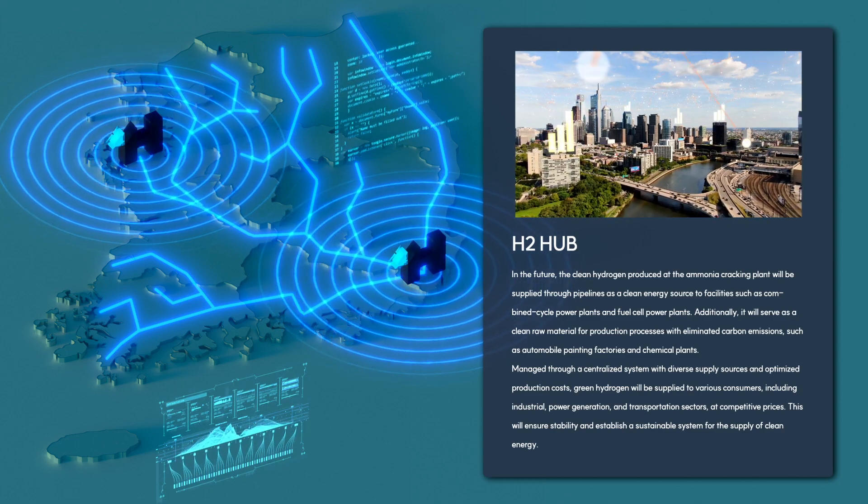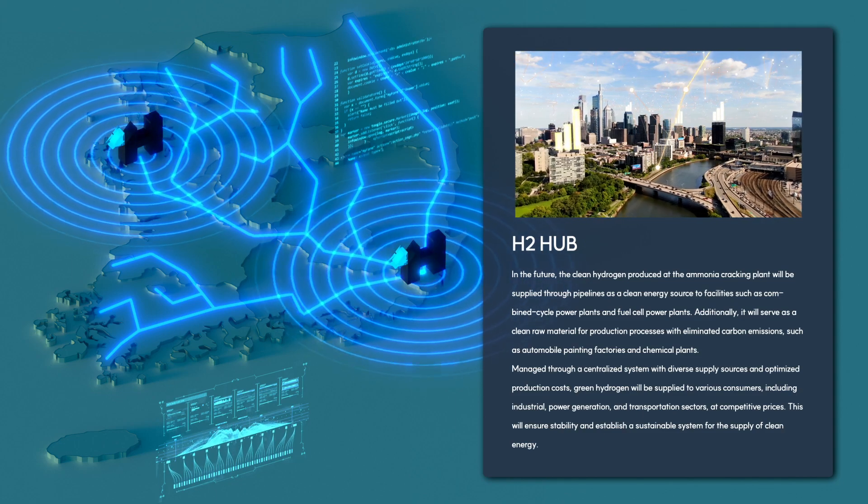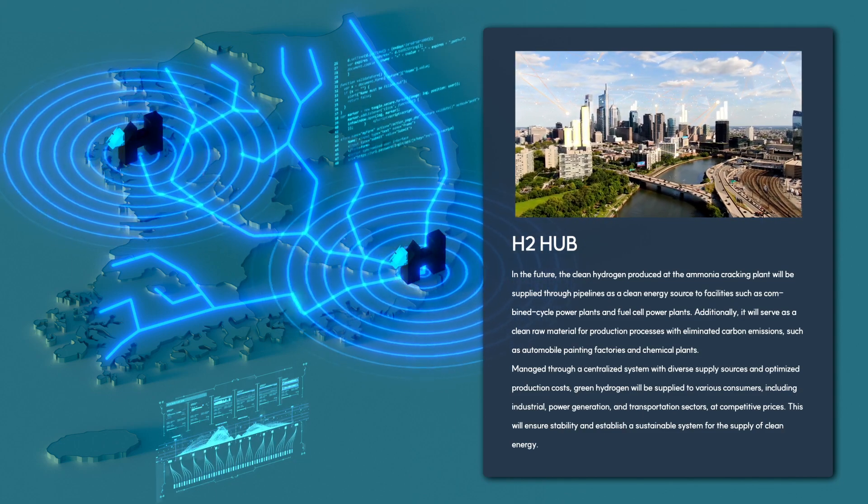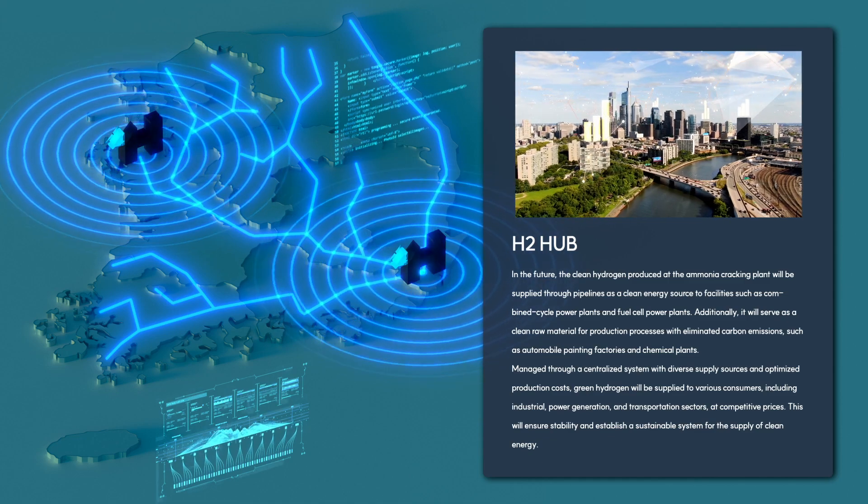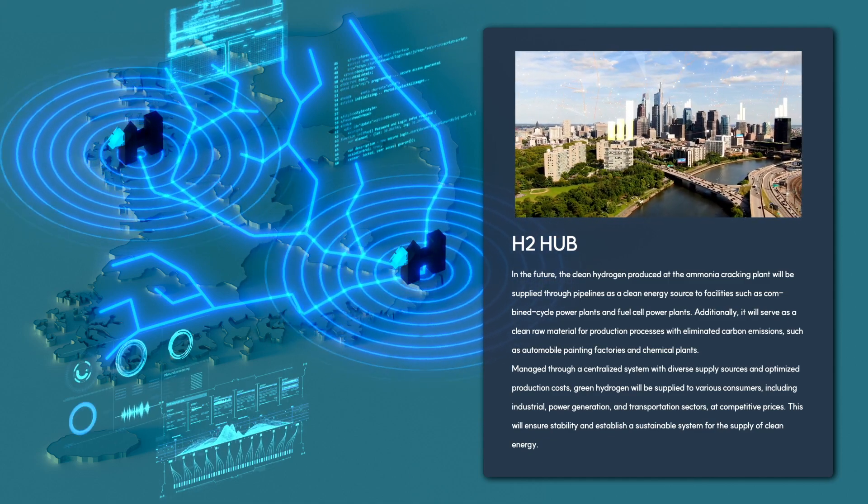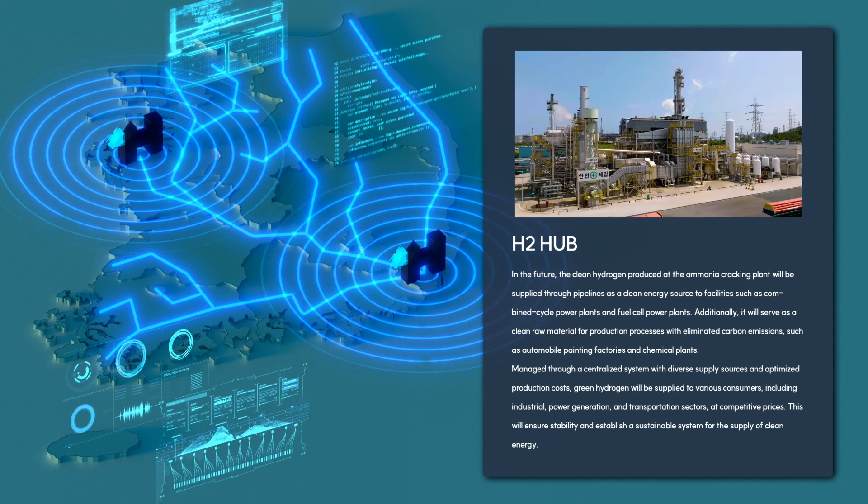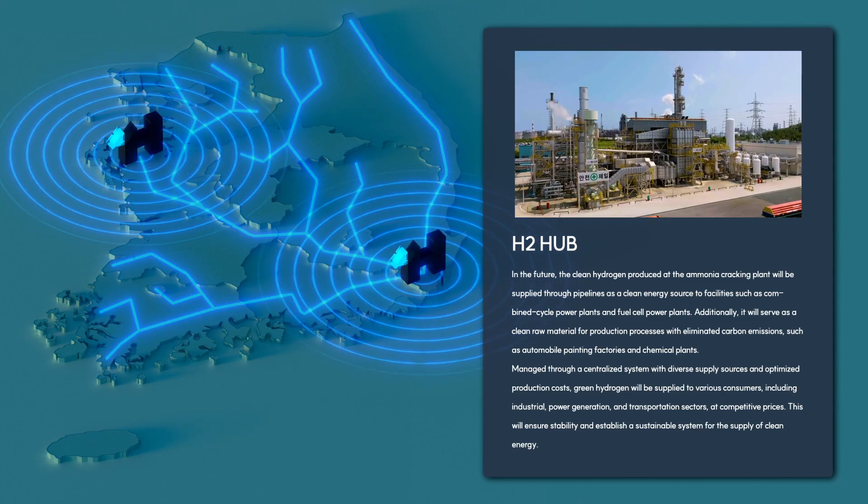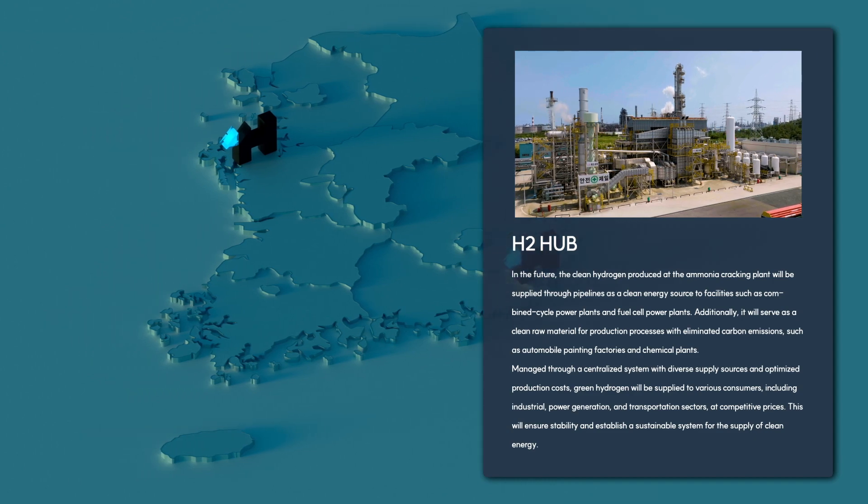Managed through a centralized system with diverse supply sources and optimized production costs, green hydrogen will be supplied to various consumers, including industrial, power generation, and transportation sectors at competitive prices. This will ensure stability and establish a sustainable system for the supply of clean energy.